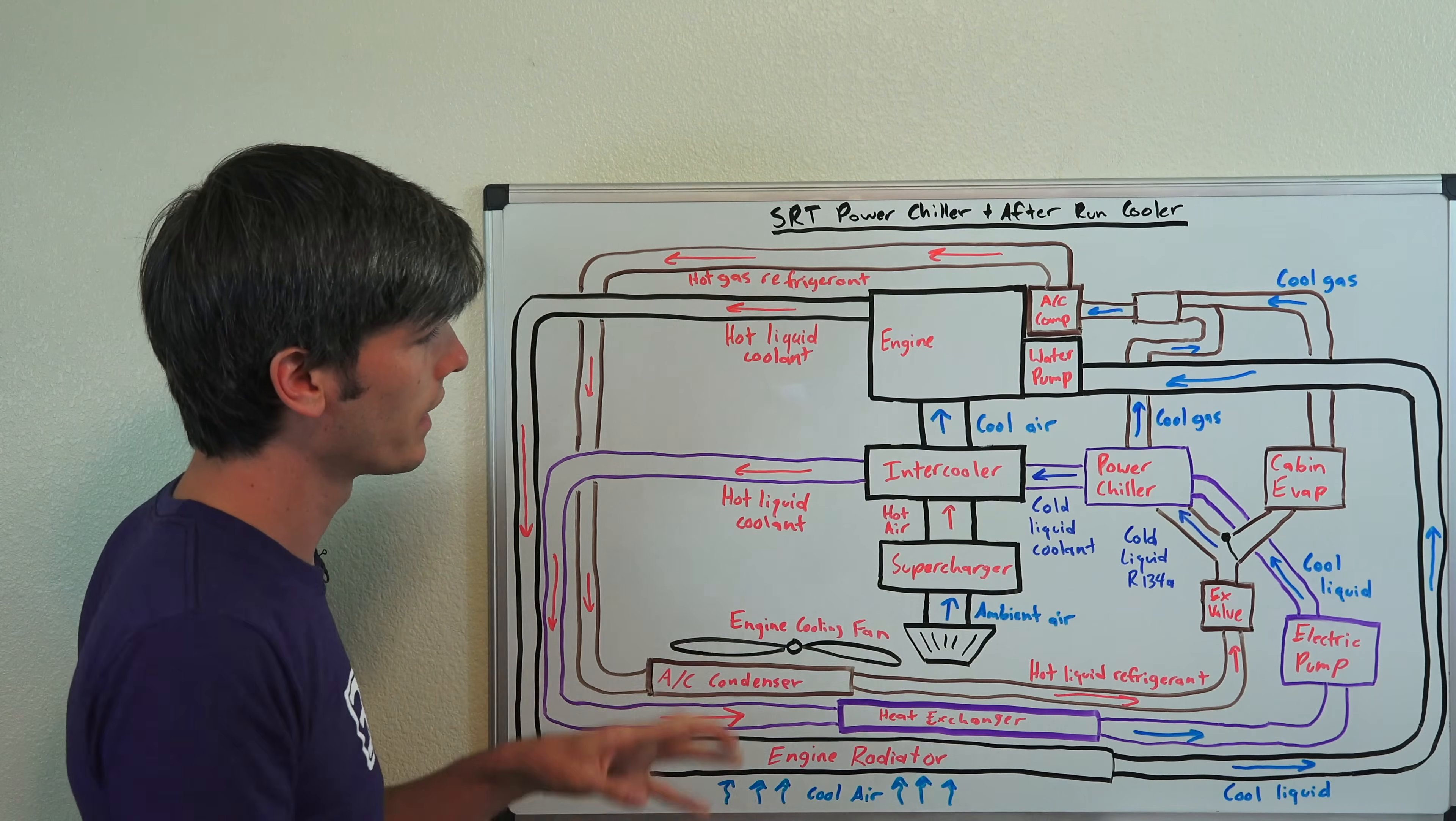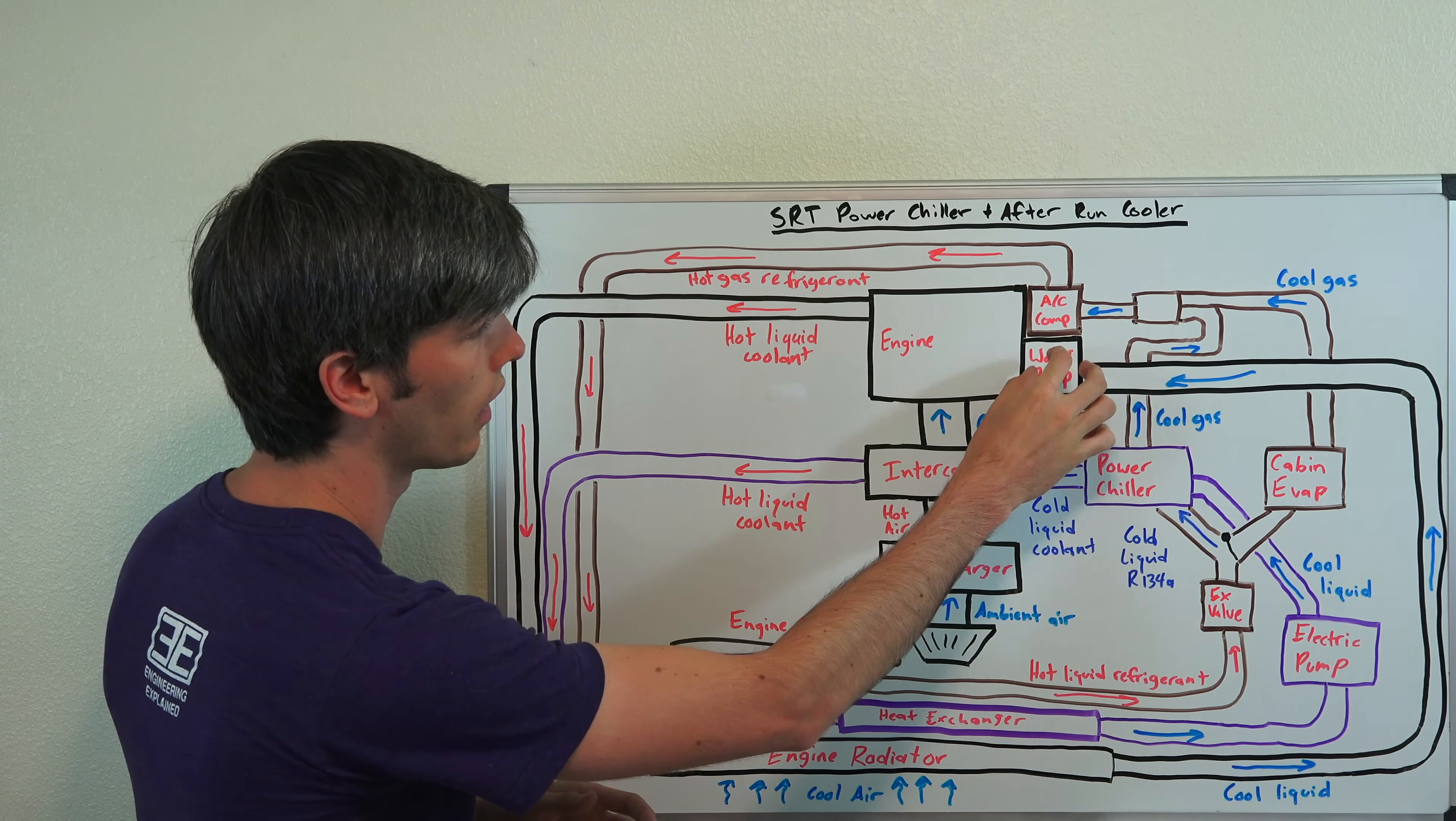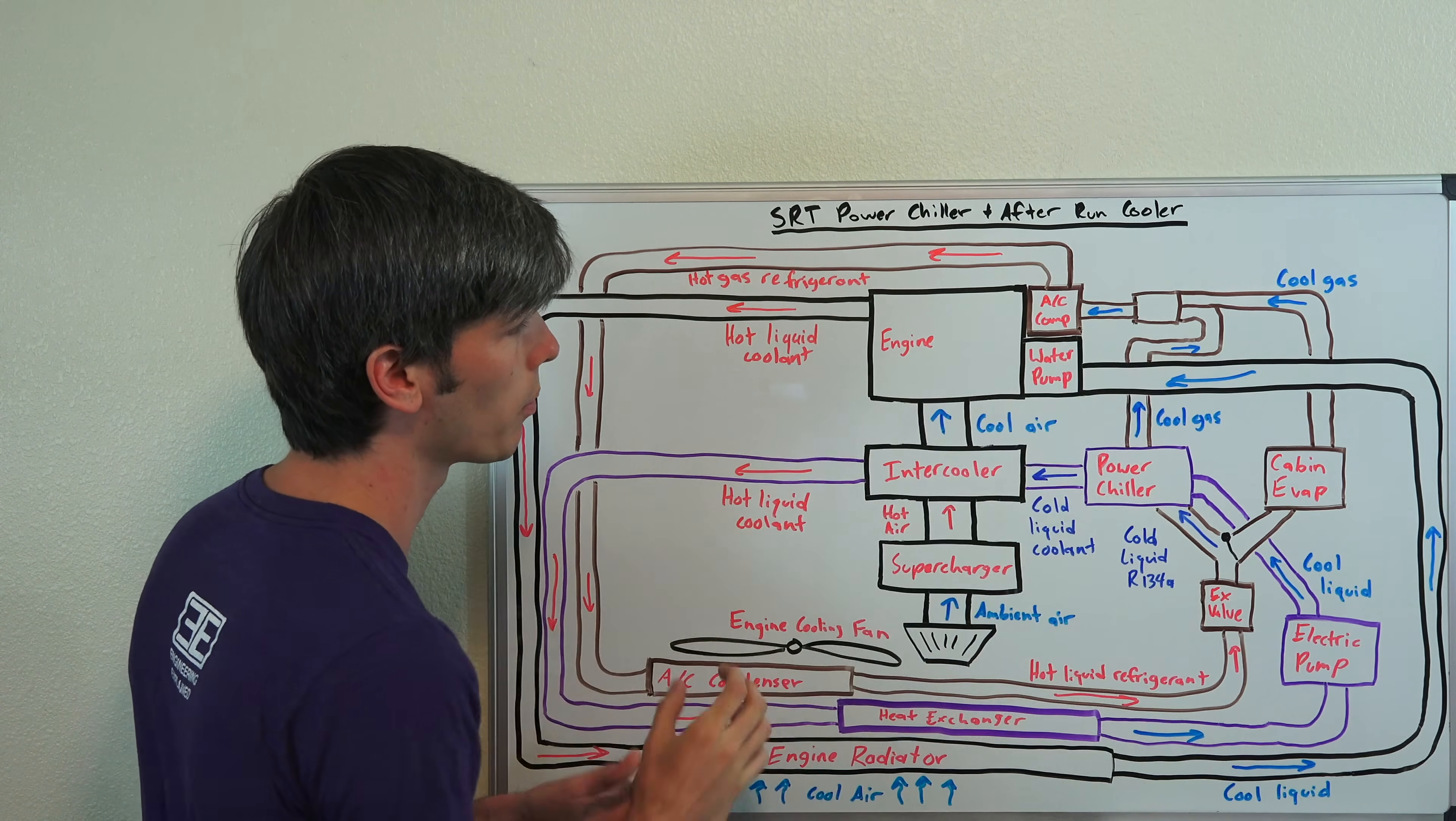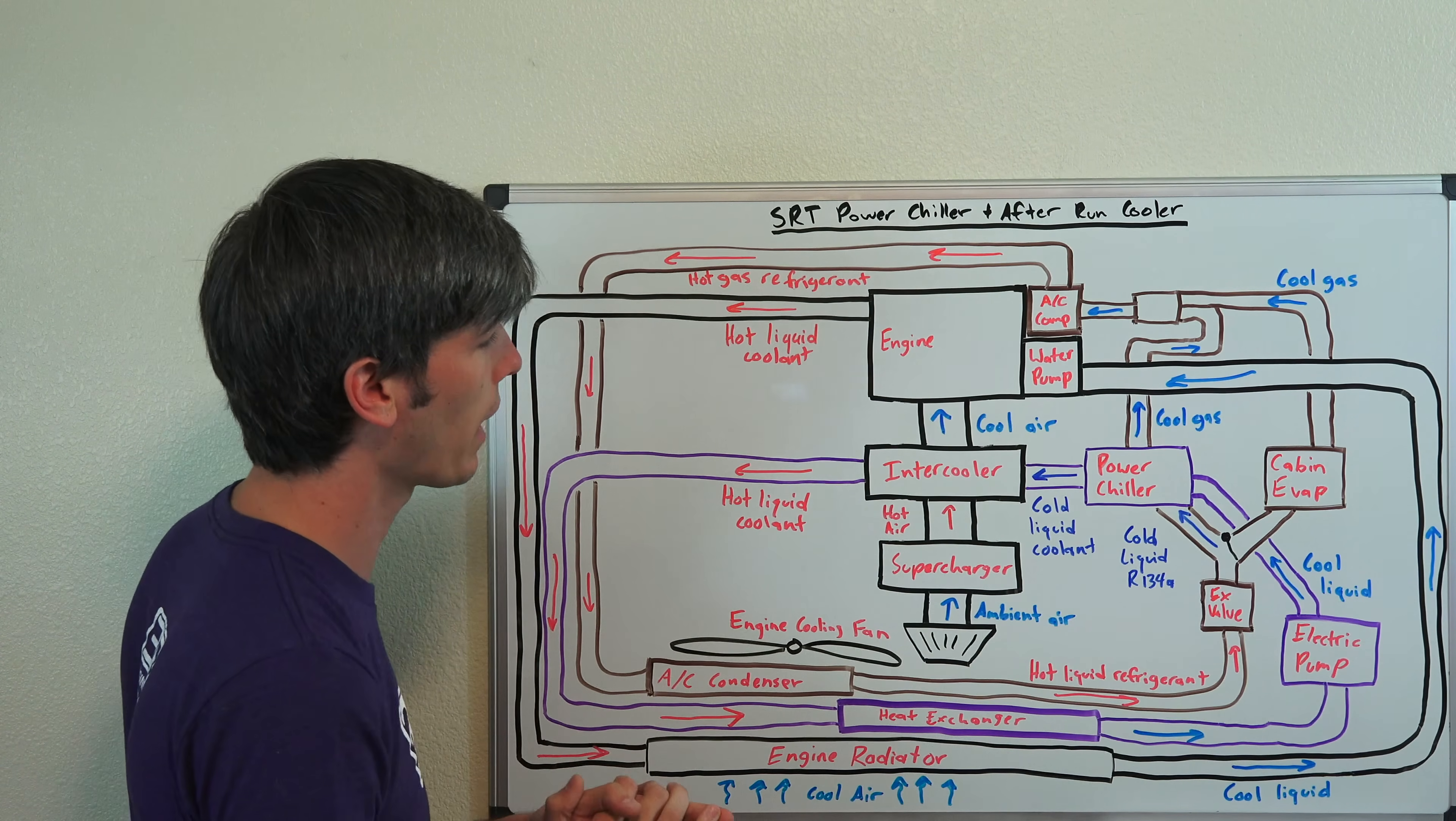Now, your second system you have is the intercooler. So, it has its own cooling circuit. The engine has an engine-driven water pump. However, the intercooler is using an electric pump. So, it's driven by the battery ultimately.